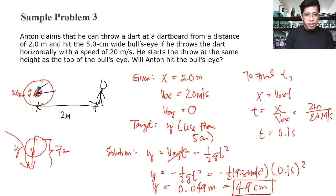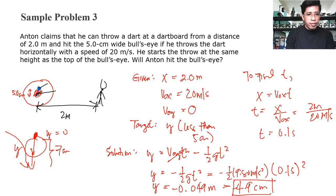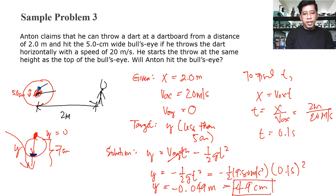The result is negative 4.9 centimeters because the arrow is going downward. Looking at the diagram, the dart lands almost outside the bull's eye — it is just 0.1 centimeter away from going outside the bull's eye diameter. If Anton applied a slightly lesser velocity, he would not hit the bull's eye.